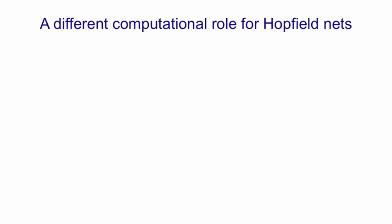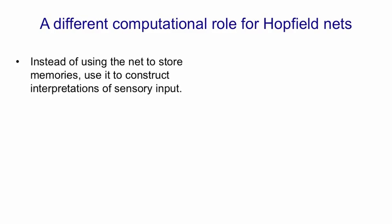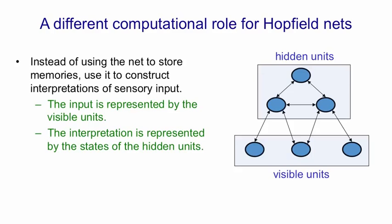There's a different way of using the ability to find local minima. Instead of using the net to store memories, we can use it to construct interpretations of the sensory input. The idea is that we have the input represented by some visible units, and we construct an interpretation of that input in the set of hidden units.